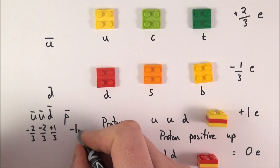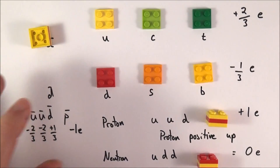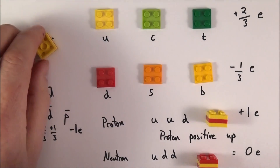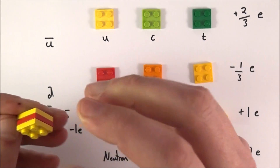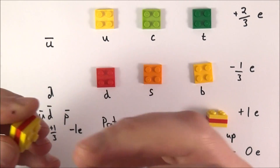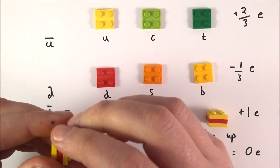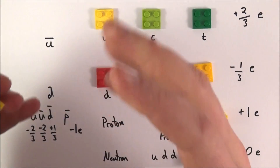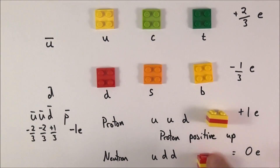The charge on an antiproton is equal to minus one of the elementary charge. Antimatter does exist and is real. When matter and antimatter meet they create energy, and conversely a large amount of energy can produce a matter-antimatter pair.